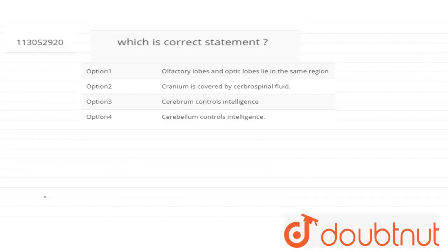So the question is, which is correct statement? Option number 1: olfactory lobes and optic lobes lie in the same region.